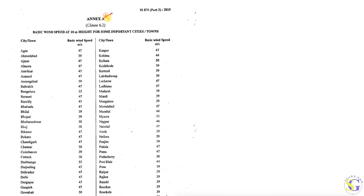Annexure A is all about basic wind speed. It mentions basic wind speed with respect to cities and towns. For example, if you select Agra, the basic wind speed is 47 meters per second. Similarly, for Ludhiana, the basic wind speed is also 47 meters per second.